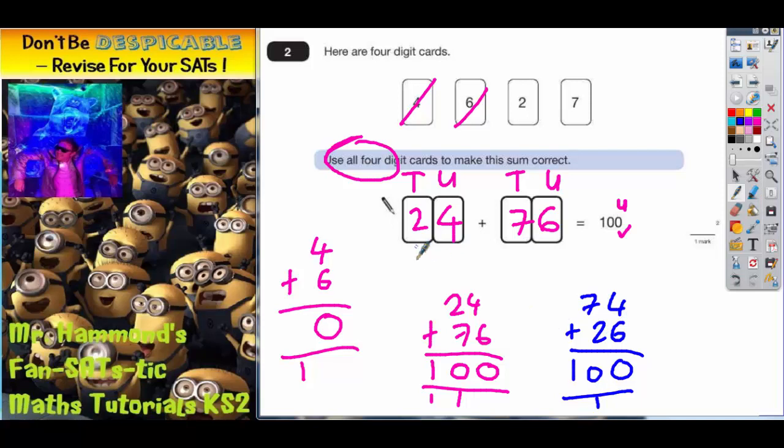So actually, you could have had that as well. 74 add 26. It doesn't matter which way round you put the digits, as long as the 4 and the 6 go in the units column, and the 2 and the 7 go in the tens column. And that's it. Job done.